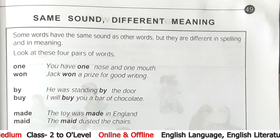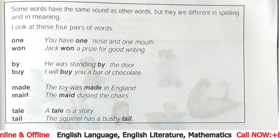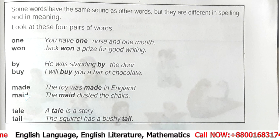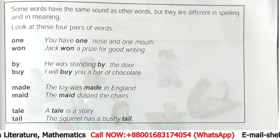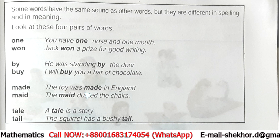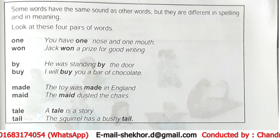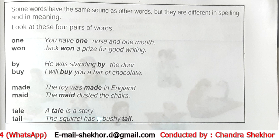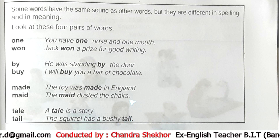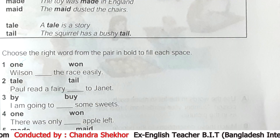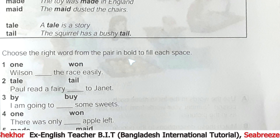Next: 'made' — the toy was made in England. And here another word: 'maid' — the maid dusted the chairs. Same thing applies: pronunciation is the same but by the help of examples we understand the meaning is different. Then 'tale' — a tale is a story. And 'tail' — the squirrel has a bushy tail.